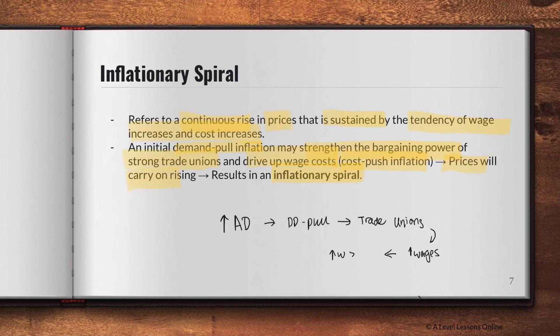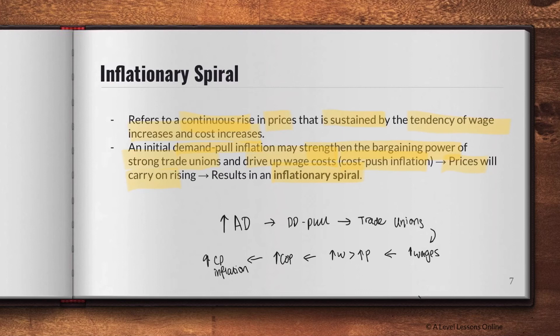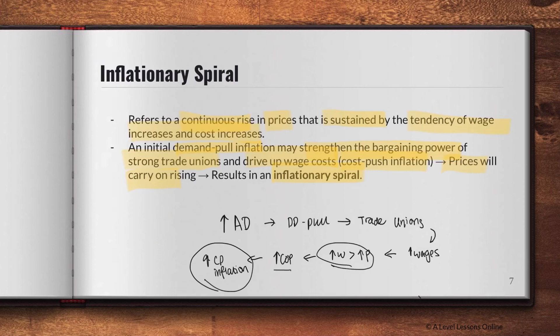If the increase in wages is more than the increase in productivity, it causes an increase in the cost of production and hence cost-push inflation. When demand-pull inflation occurs, prices are already rising, so workers fight for increases in wages and disposable income through trade unions. This increased pressure on wages — when wages rise more than productivity — causes an increase in the cost of production and therefore cost-push inflation. The inflationary spiral essentially involves a simultaneous rise in AD combined with a fall in AS.